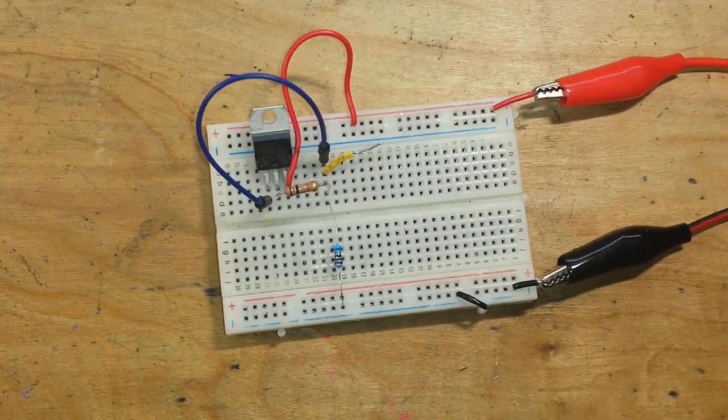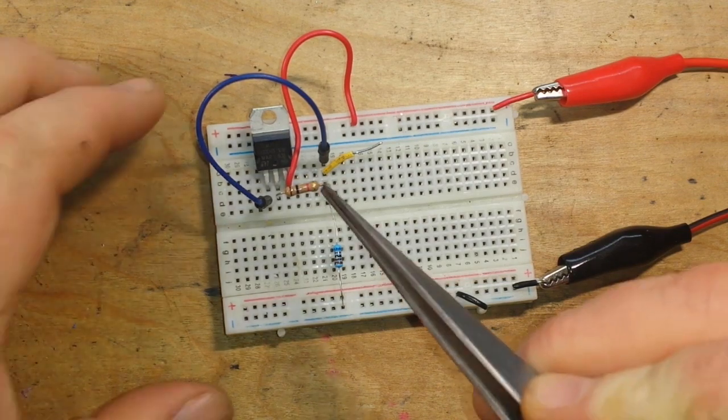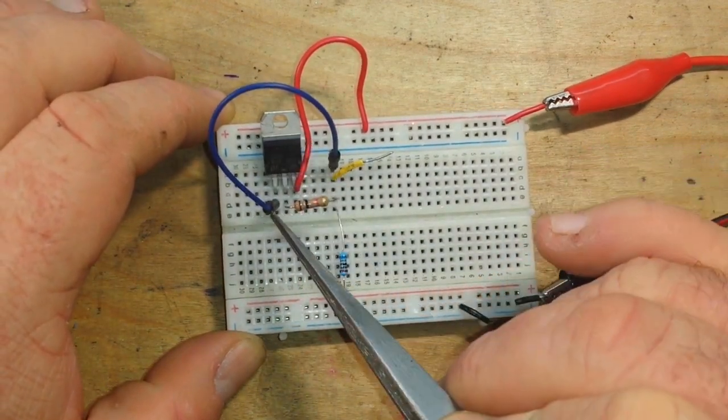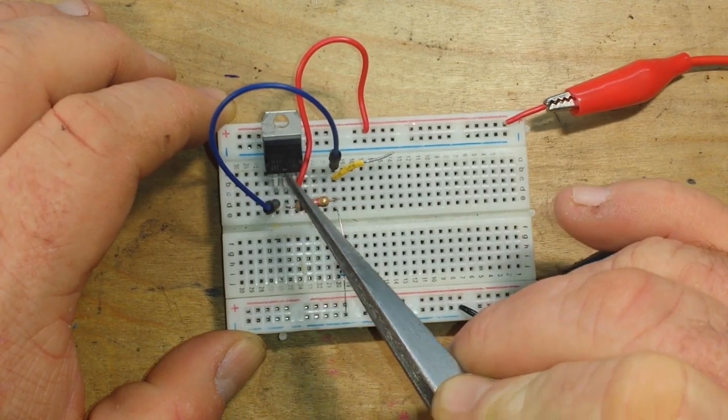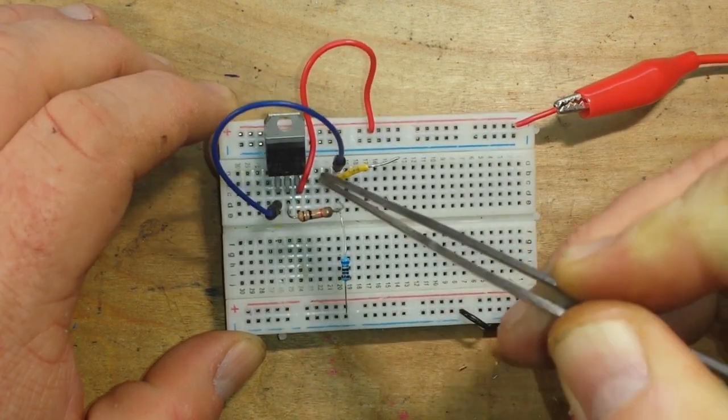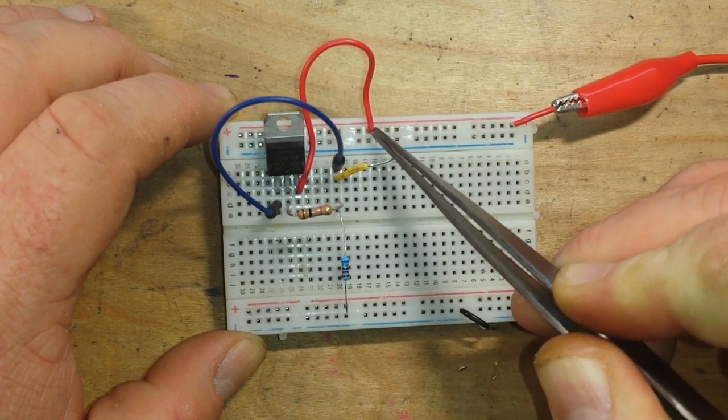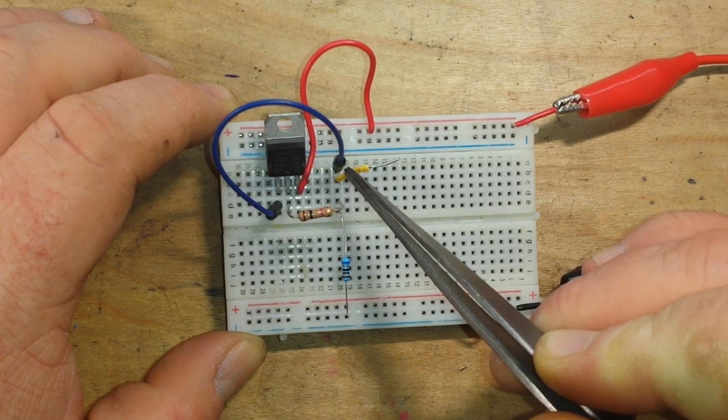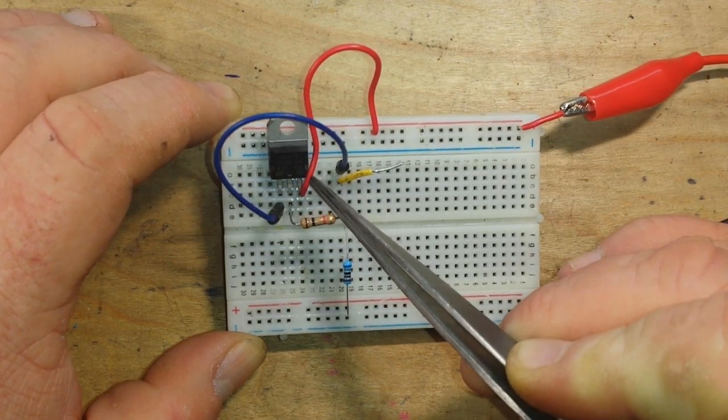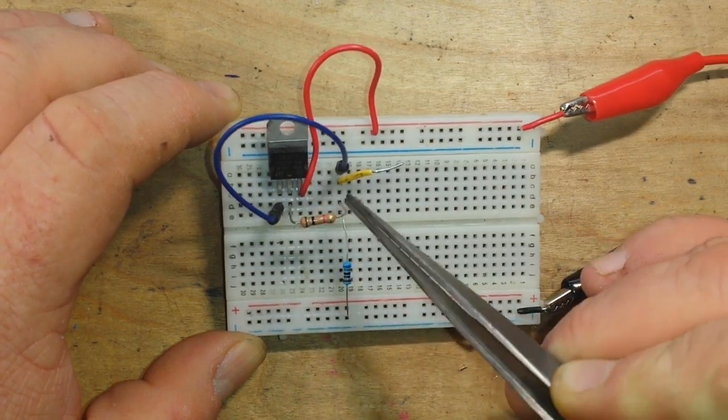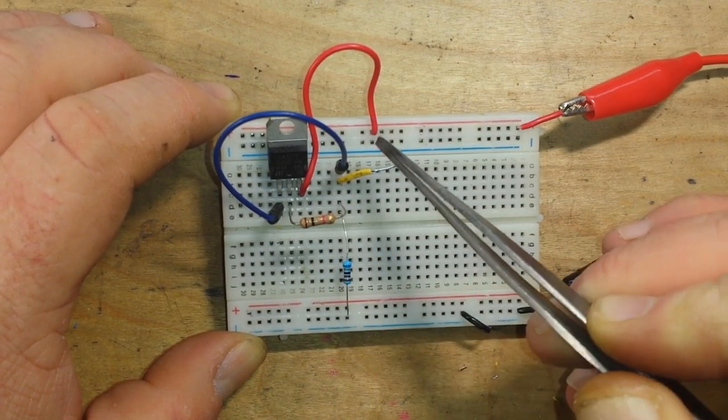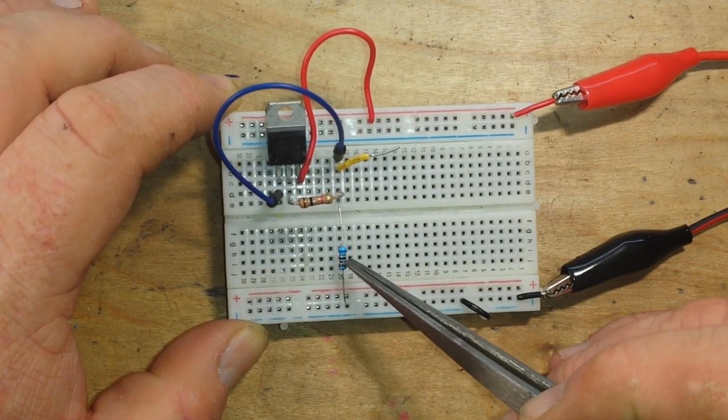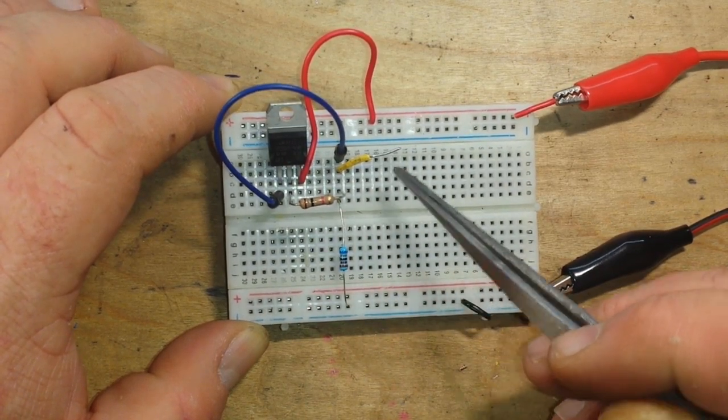We're all set up. So here is our LM317 pins 1, 2, and 3. Remember 3 is our adjust, 2 is our out, 1 is our in. So there's one running up to our VCC. There's pin 2 going over to the output. Pin 1 is the adjust, pin 3 goes to VCC. There's our 1K, there's our 6.2, and they're set up as a voltage divider.